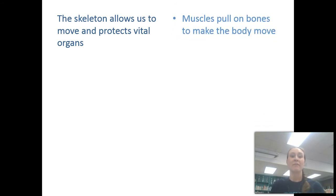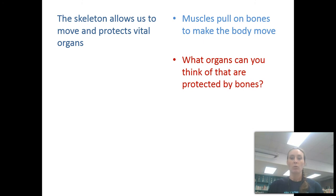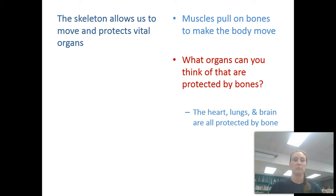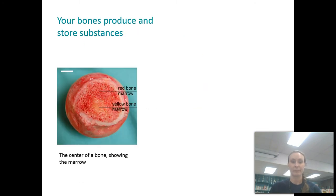The skeleton allows us to move and protects vital organs — muscles pull on bones to make the body move. Organs protected by bones include the heart, the lungs, and the brain. Think about how many times you've hit your head or been punched in the chest — that would be a lot worse without your skeleton.